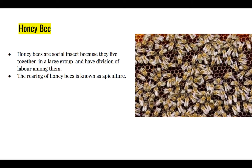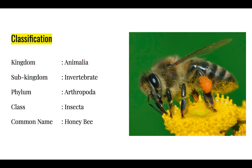they live together in large groups and they have division of labor among them. There are three types of bees, and each type has a different kind of function. The rearing of honeybees is known as apiculture. In classification, the kingdom is Animalia, subkingdom is Invertebrate, phylum is Arthropoda because they have jointed legs, and class is Insecta because their body is divided into three parts.